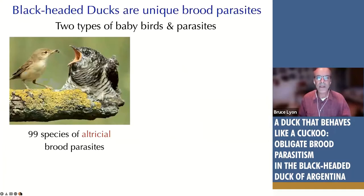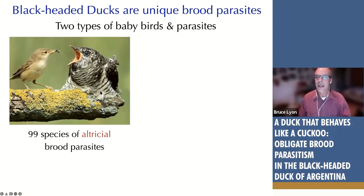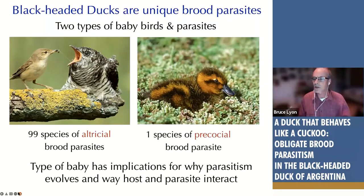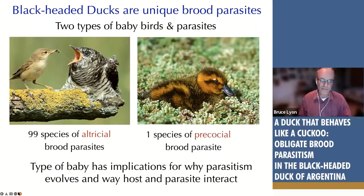Another interesting pattern: all but one species of obligate brood parasites in birds have altricial babies — born pink and helpless, requiring enormous amounts of food from their parents. This is in contrast to precocial chicks, like ducklings or chickens, that feed themselves. Any of you with chickens will know that on the day chicks hatch, they can run around with their eyes open and pretty soon feed themselves.